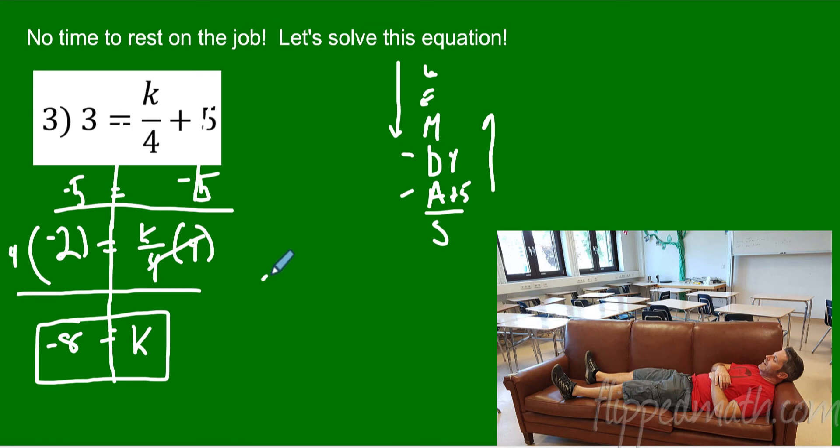All right, we should check this. So let's see here, 3 equals what is our K, and K is negative 8 over 4 plus 5. 3 equals negative 2 plus 5. Yep, 3 equals 3 and it checks. Let's try another one.